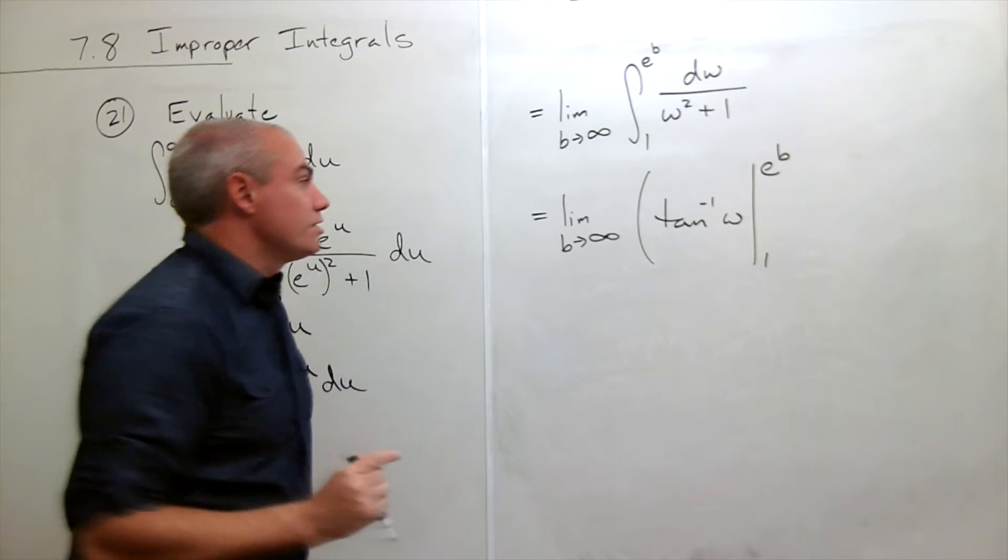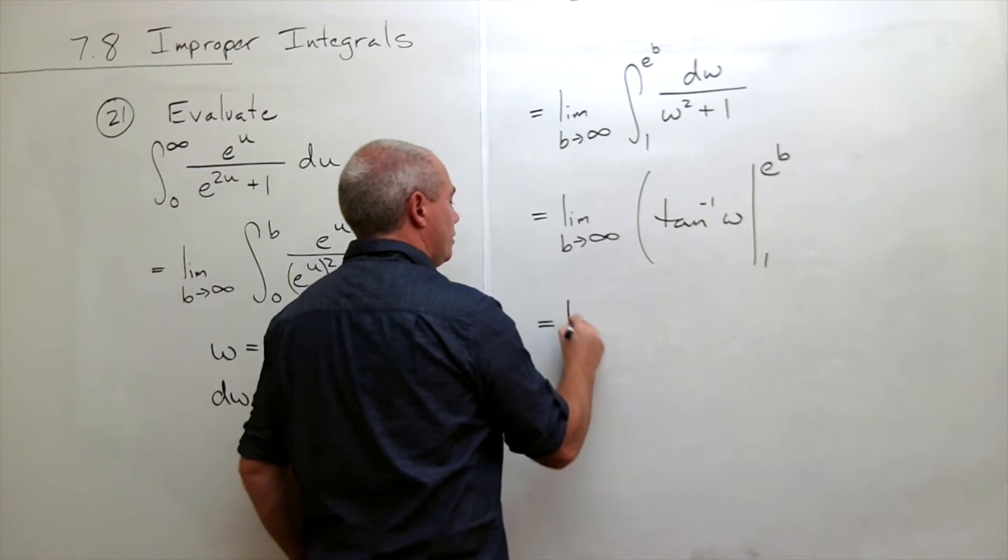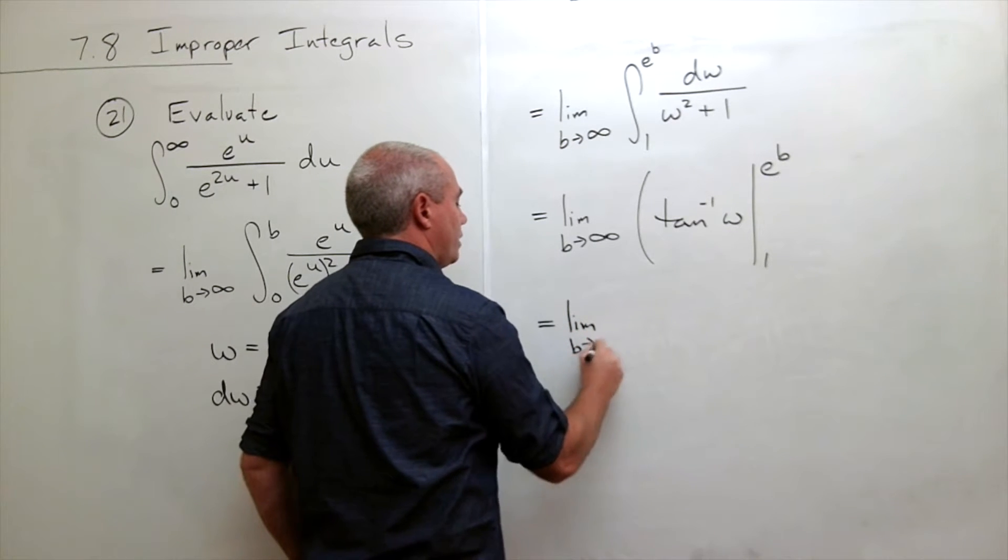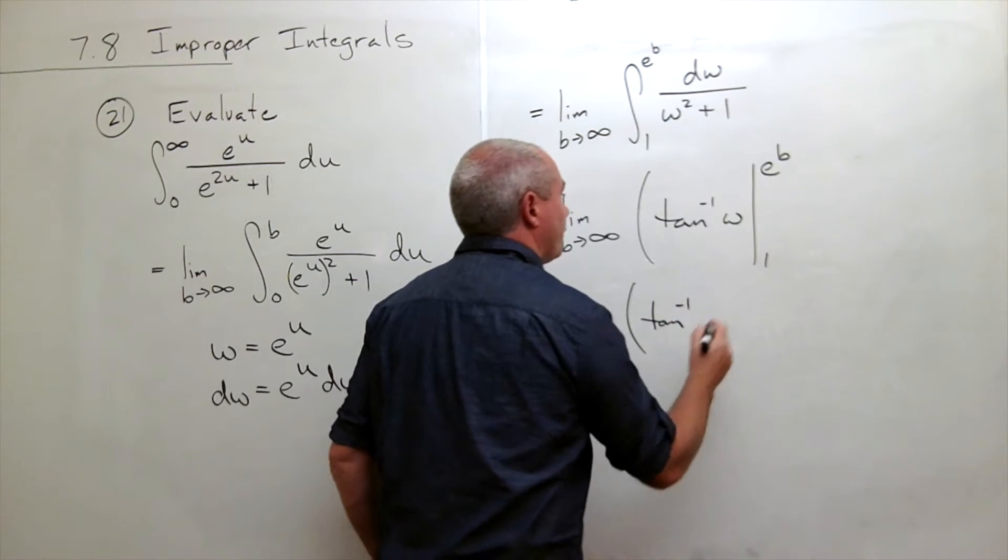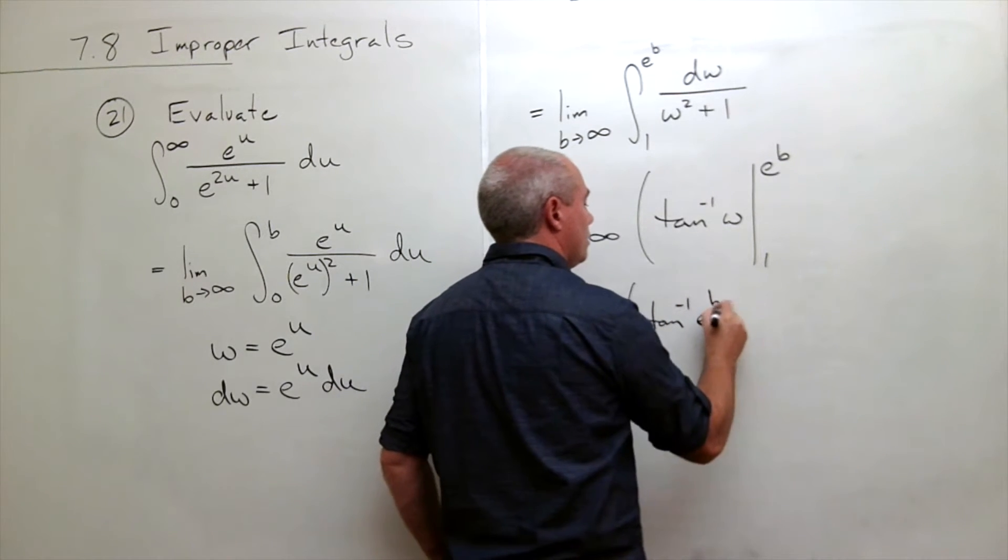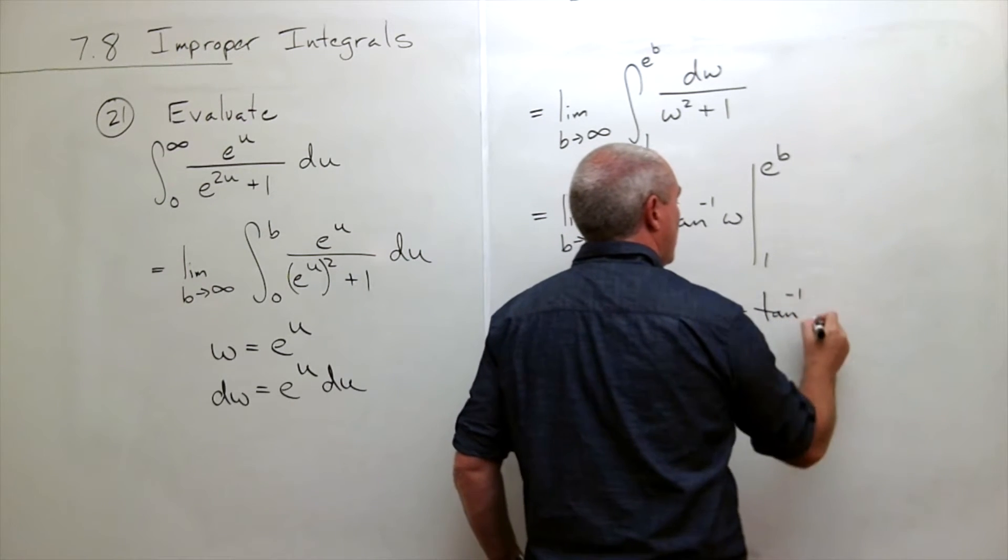Alright, so let's plug things in. We get limit as b goes to infinity of tan inverse of e to the b minus tan inverse of 1.